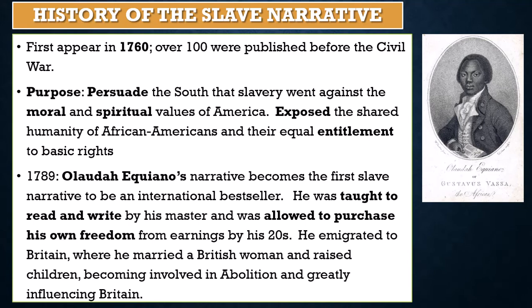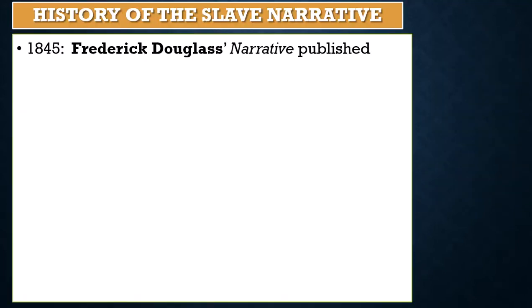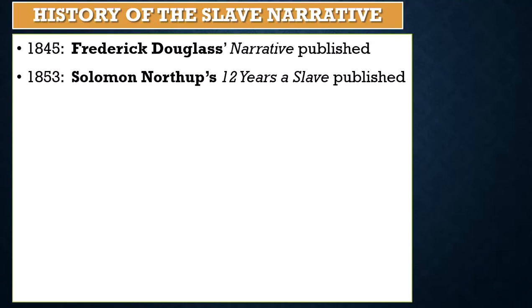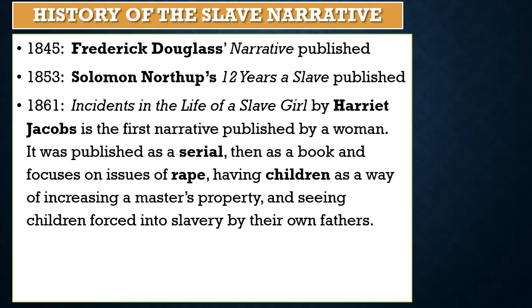Gustavus Vassa — another name he went by. Around this time, slave narratives started to become more popular. In 1845, Frederick Douglass published the Narrative of the Life of Frederick Douglass. In 1853, Solomon Northup's Twelve Years a Slave. In 1861, Incidents in the Life of a Slave Girl by Harriet Jacobs.